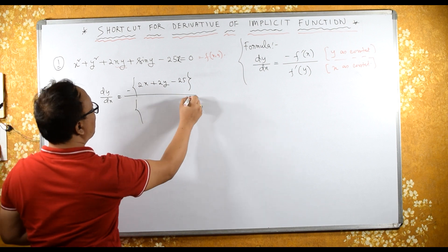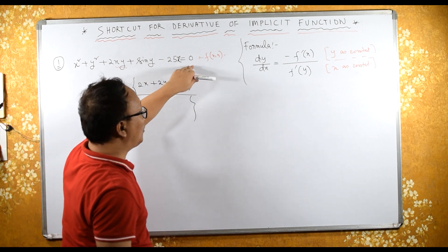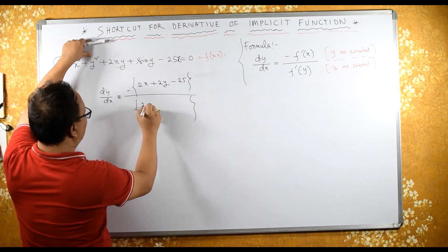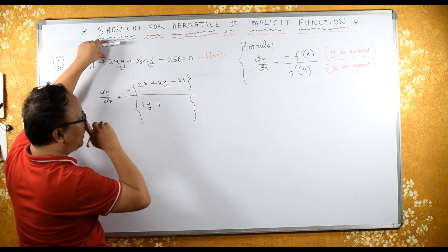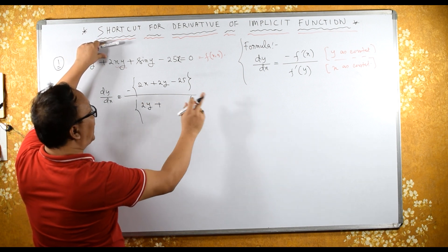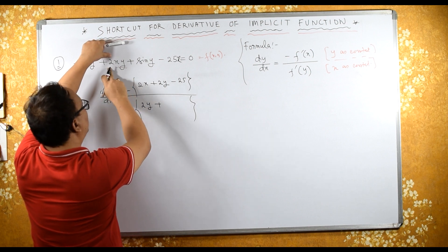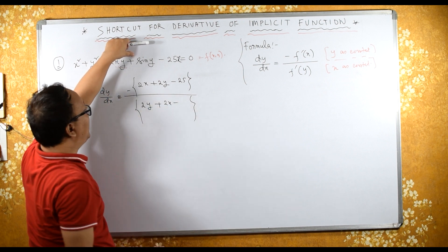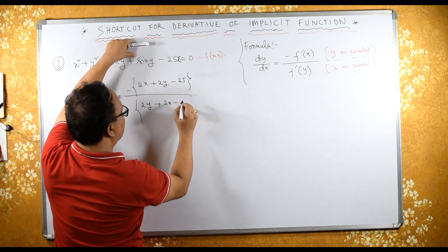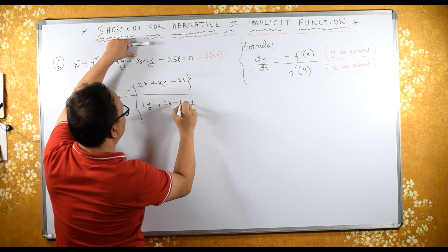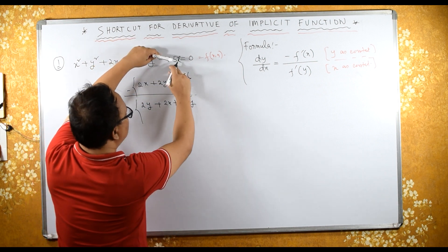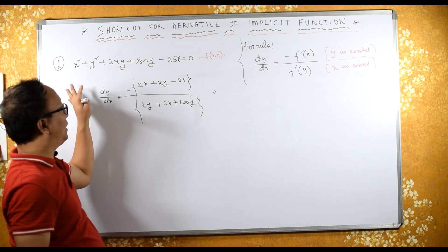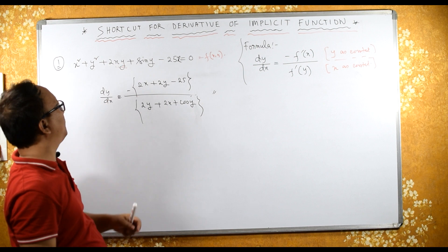Now for f'y, differentiating with respect to y and considering x as a constant: the first term becomes 0, giving 2y. Considering x as a constant, 2x is constant, so we have 2x. The derivative of sin is cos y. So we get cos y, and the remaining term becomes 0. This is the required answer — within one line you can get this answer.